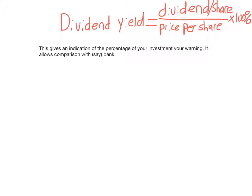Dividend yield allows you to compare with other investment types. We know we could invest in a bank in a fixed-term deposit — for example, put $10,000 in a bank account and the bank might give you 4% interest. If the dividend yield is more than 4%, shares are a better option; if it's lower than 4%, shares are not a better option. So dividend yield is something you'd consider before you invest.